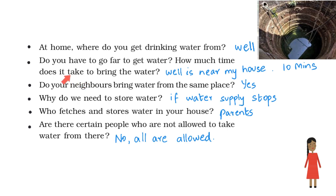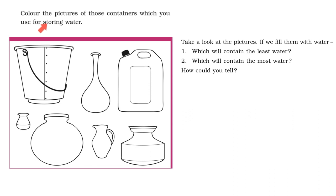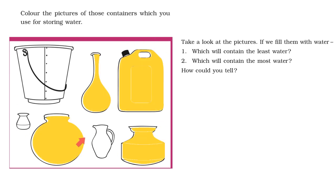In your notebook, think of answers for these questions. Ask these questions to yourself and write the answers in your book. Colour the pictures of those containers which you use for storing water. Sona stores water in pots and can. In your book, colour the containers that you use for storing water.